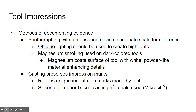When collecting tool mark evidence, you want to photograph it with a measuring device so you have a scale to refer to. You can use oblique lighting to highlight the mark and make it more visible. You can also use magnesium smoking on a dark-colored tool — you light magnesium and the magnesium oxide powder coats the surface to enhance its details. You can also cast an impression mark made in a surface using micro seal, a silicone or rubber-based casting material, to create a three-dimensional mark impression of the tool for comparison.